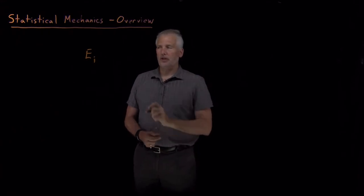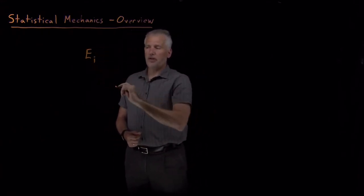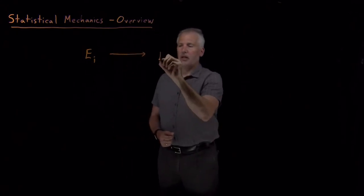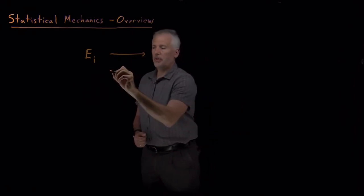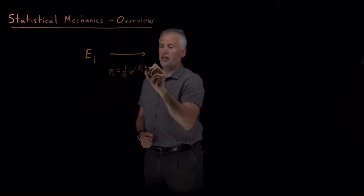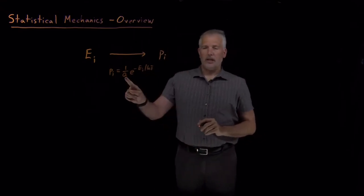If we know the energies of the states of a system, we can use those energies to calculate the probabilities with equations like the Boltzmann probability distribution. Probability is e to the minus energy over kT, and recall that in order to do this we need to know Q.